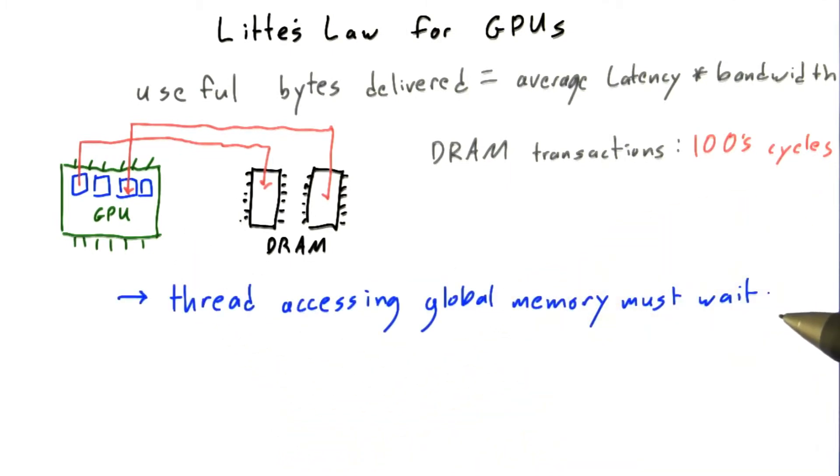So this means that a thread that's trying to read or write global memory is going to have to wait hundreds of clocks, time that it could otherwise be spending by doing actual computation.